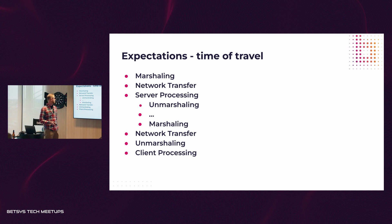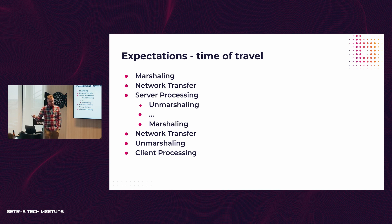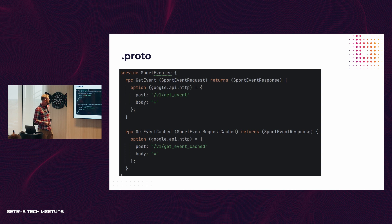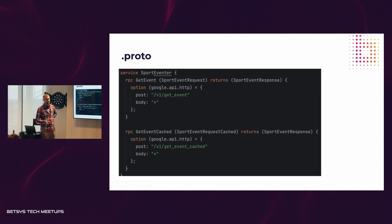Here's a breakdown: to make a request there is marshalling, network transfer, server-side unmarshalling of the request, some processing, marshalling the response, transfer back, and unmarshalling on the client — client processing isn't important for our purposes. Since we are a sport betting company, I prepared two RPCs: the first has a sport event request with an ID (a string) and a large sport event response, which I'll show on the next slide.